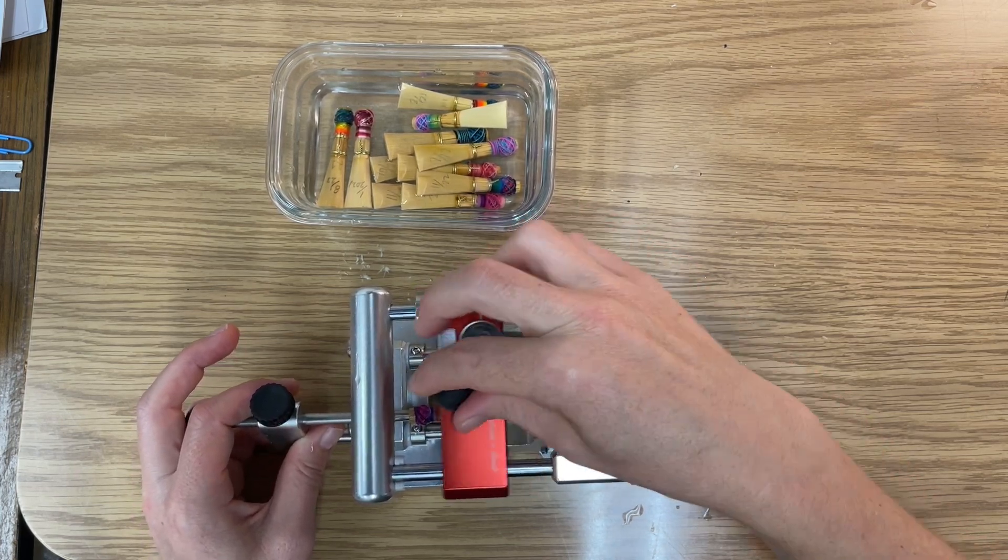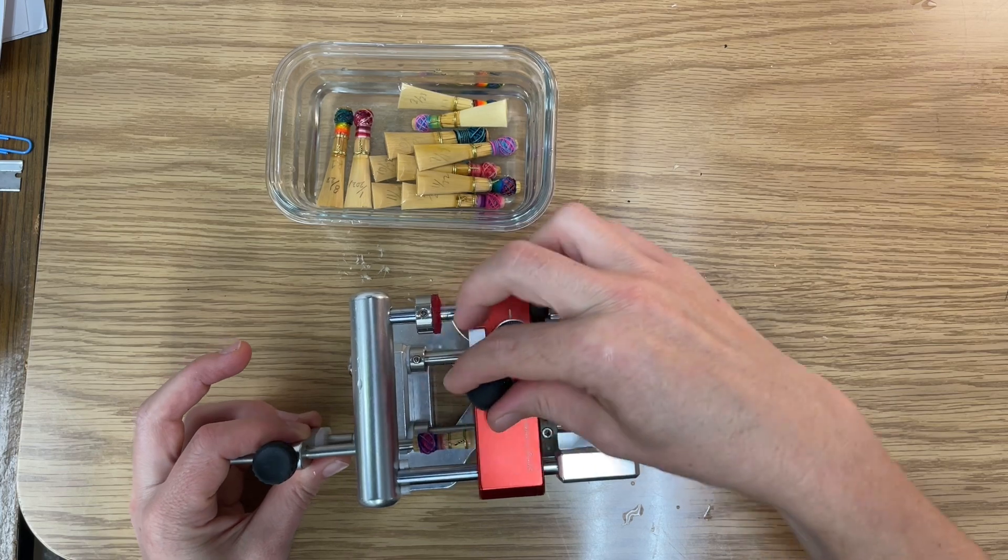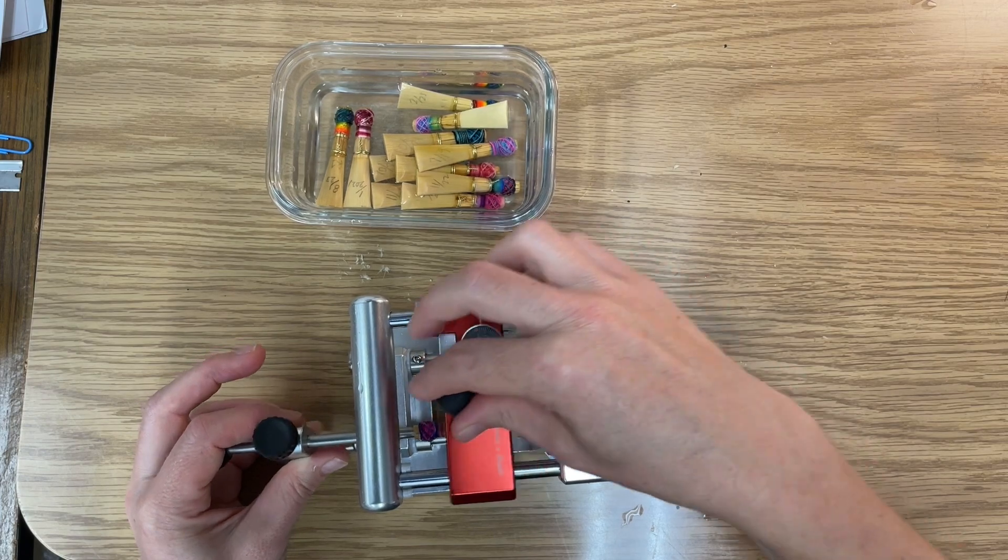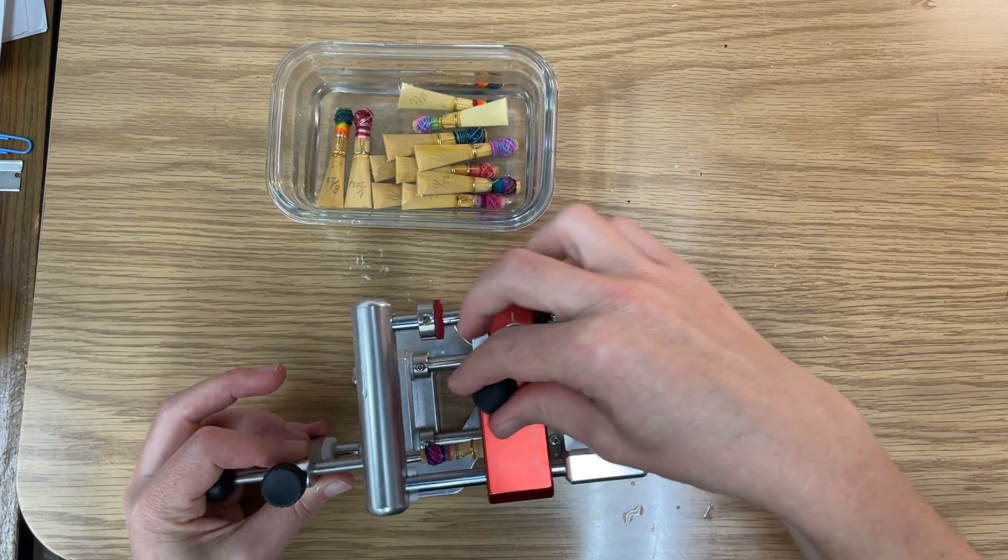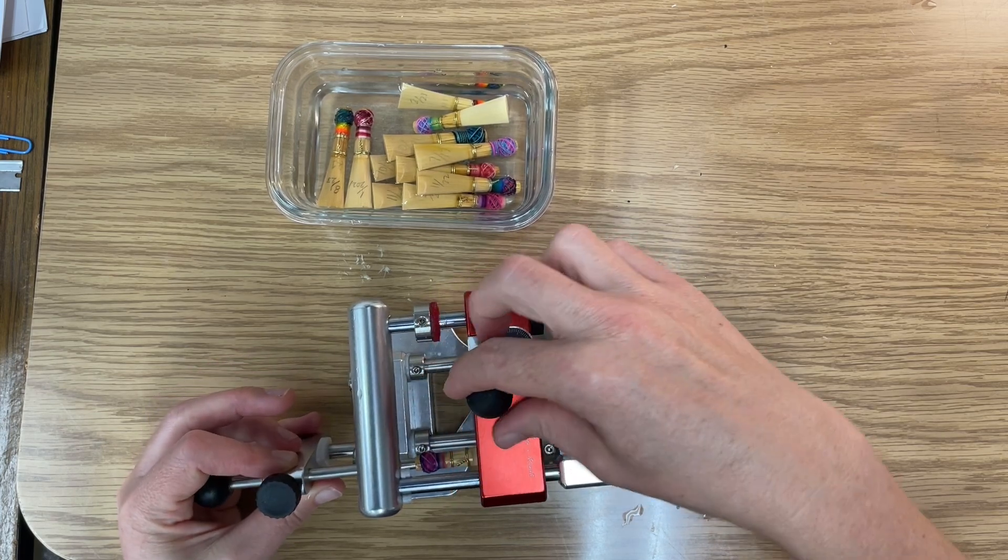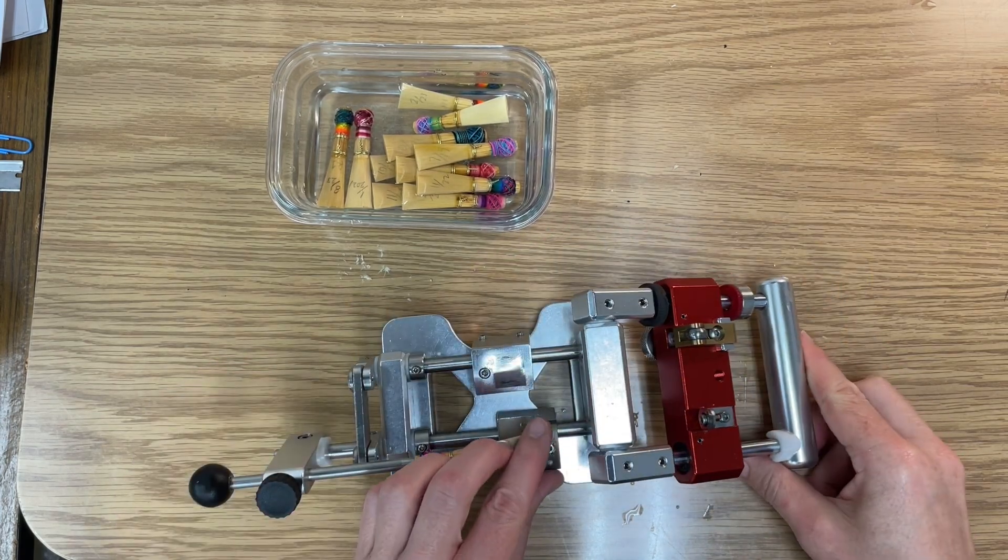Until we get to where the dial that I've been turning is completely loose, and that means that it's at its lowest setting or its thinnest setting, and that's where we can stop. And then after that point I'm not pushing very hard, I'm just letting the sharpness of the blade take cane off the reed.